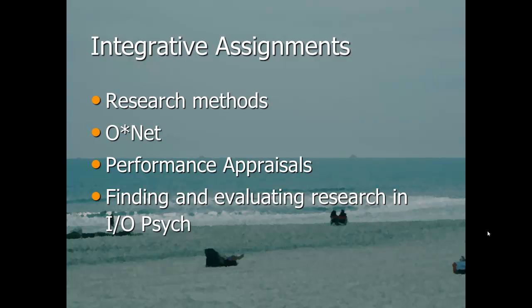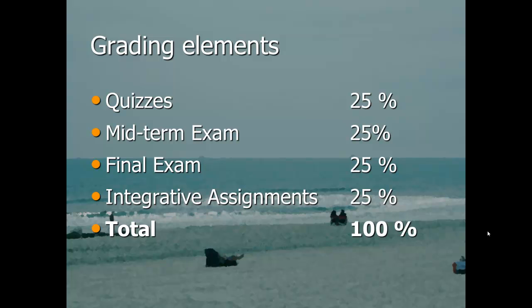For grading, everything is essentially a quarter each. The quizzes together are a quarter of your grade — there are about ten or eleven quizzes, so each quiz is about two and a half to three percent of your overall grade. The midterm and the final are each a quarter of your course grade, and the integrative assignments together are also a quarter. The important thing is not to let any one area slide, because if you blow one component, the highest grade you can get is 75%.